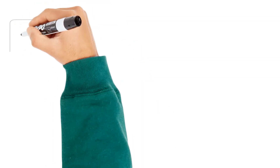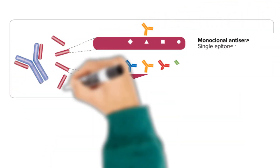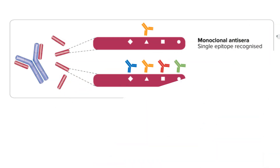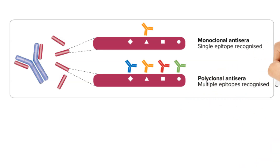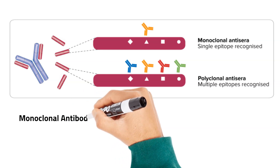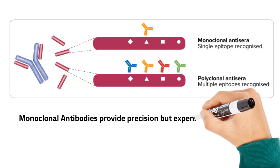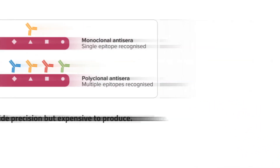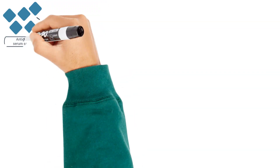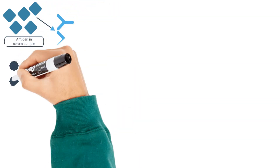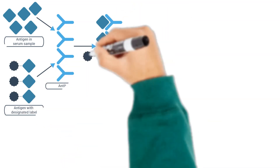There are two types of antibodies used in immunoassays. Monoclonal antibodies are derived from a single cell line and have a specific affinity to a single epitope on an antigen, and polyclonal antibodies are derived from multiple cell lines and therefore have affinity to multiple epitopes on an antigen. There are several types of immunoassays which can be classified into two main categories: competitive and non-competitive.